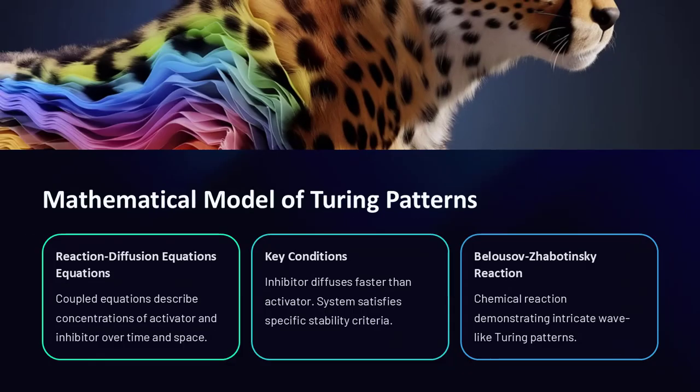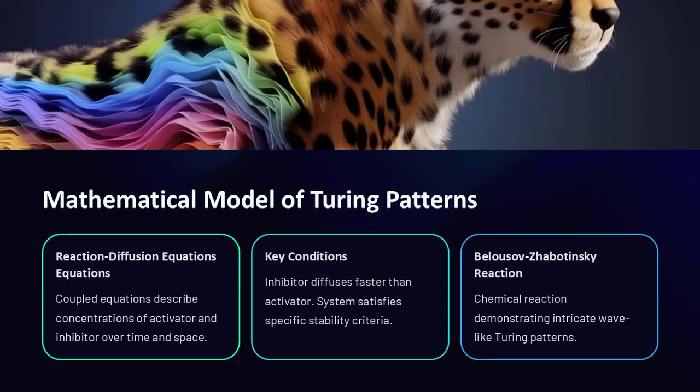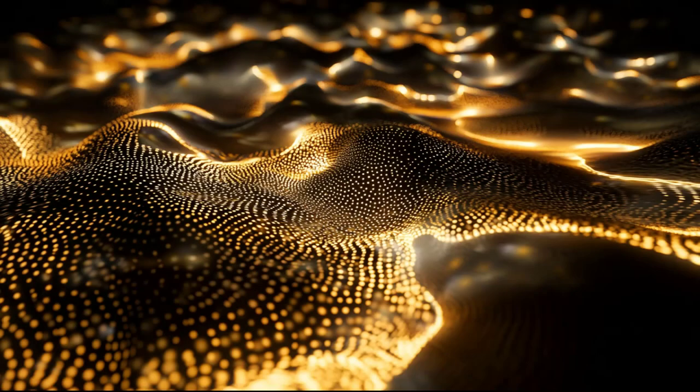Turing patterns are described by a set of coupled reaction diffusion equations. In a chemical reaction known as the Belousov–Zhabotinsky (BZ) reaction, when coupled with diffusion, one can observe the formation of intricate wave-like Turing patterns, demonstrating these equations in action.